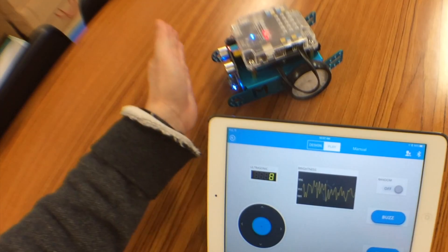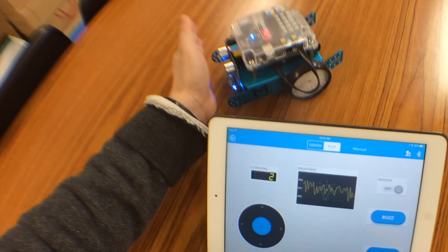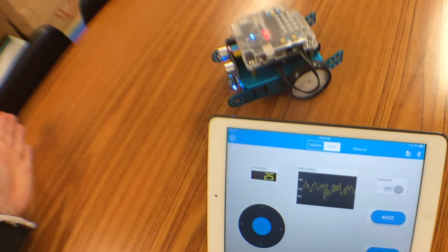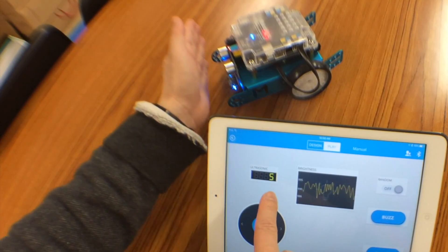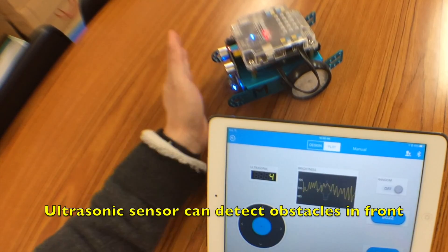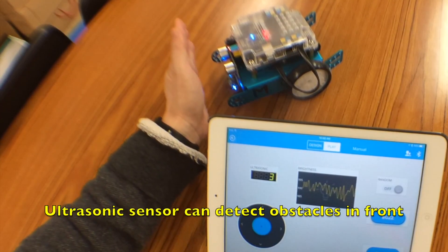You can see, if I put my hand in front of the AirBot, the distance will be just two to three units. If I move my hand away, you can see that the value increases. That means it can detect obstacles in front of the AirBot.